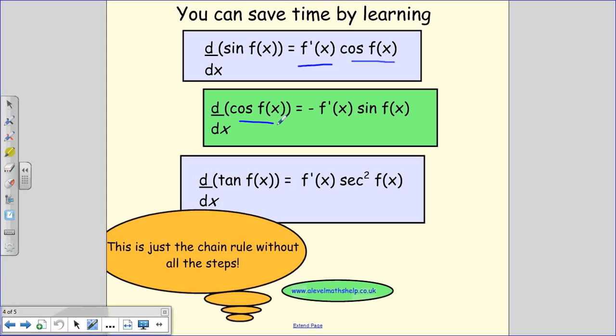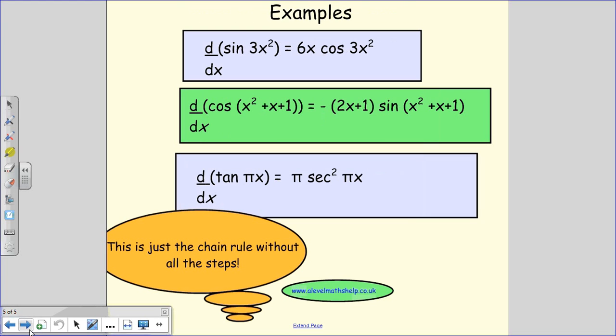And the same goes for cos of function of x. When you differentiate it, you get minus the sine of the function of x and times it by the differential of whatever the function was. And the same goes with tan. So it just makes it slightly faster and easier for you. So here's three little examples.